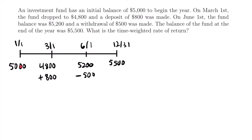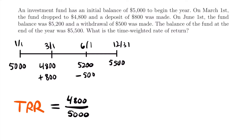With the timeline set up, calculating the time-weighted rate of return is very simple. To calculate the TWRR, we need to compound the returns over successive parts of the year. We start by taking our first reported balance — not the initial balance — and divide it by the initial balance: 4,800 divided by 5,000. Then we multiply by the next reported balance of 5,200 divided by the previous balance plus any cash flows, which is 4,800 plus 800, giving us 5,600.